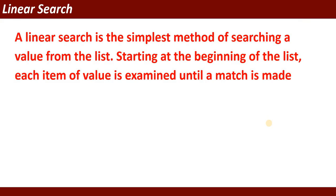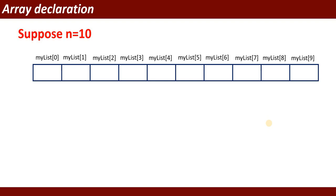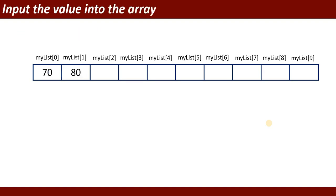What is linear search? A linear search is the simplest method of searching a value or a key from a given list. Starting at the beginning of the list, each item is examined until a match is made. Suppose you have a list of 10 elements: 70, 80, 25, 40, 55, 35, 20...